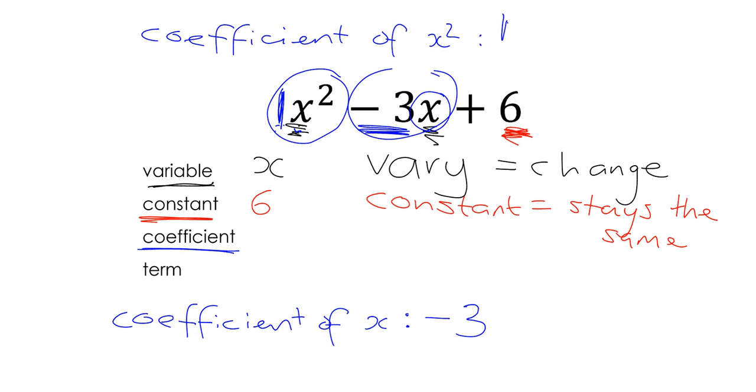And then the last word we need and the last idea we need is the idea of what's a term. Now a term in an algebraic expression is a combination of letters and variables that are multiplied together. And they are separated by plus or minus signs.